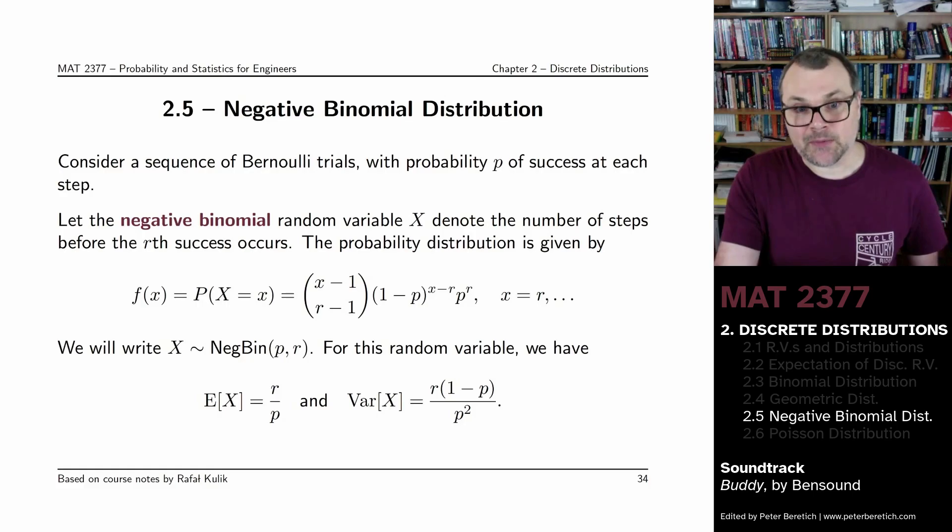We'll denote this by neg bin PR. P is the probability of success for each of your independent Bernoulli trials. R is how many successes you want.